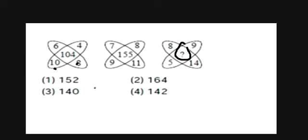So if you observe here, if you multiply 10 into 8, that is 80, and if you multiply 6 into 4, that is 24, and if we add them, we get 94.